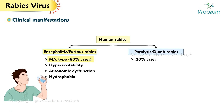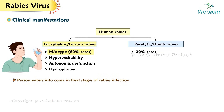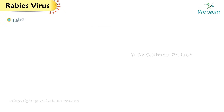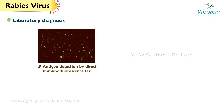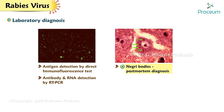A person may enter a coma in the final stages of rabies infection, which eventually leads to death. The survival rate of rabies infection is extremely low. Laboratory diagnosis: antigen detection is done by direct immunofluorescence test; antibody and RNA detection is done by reverse transcription PCR (RT-PCR); Negri bodies detection and histopathological staining of brain biopsies is done for post-mortem diagnosis.